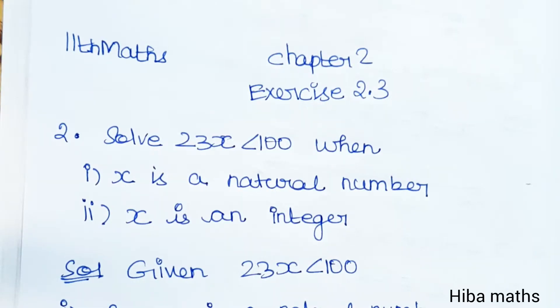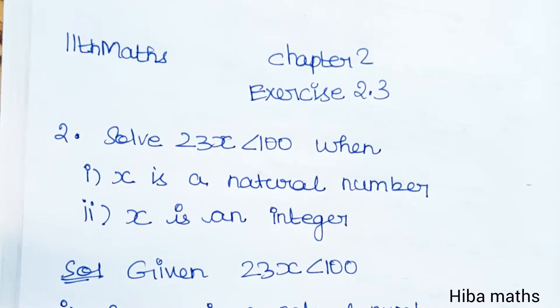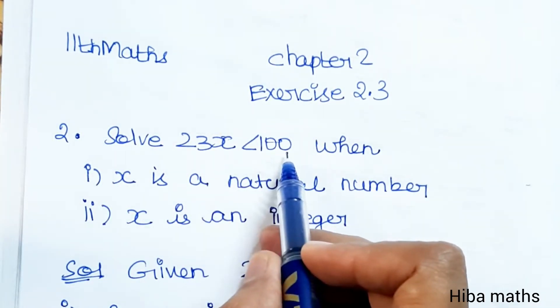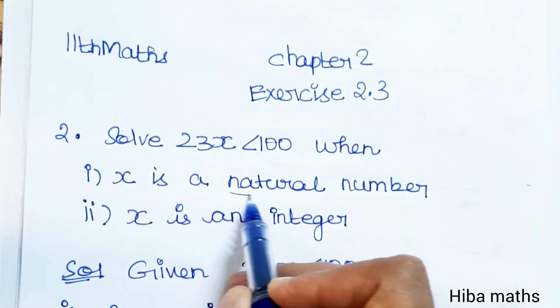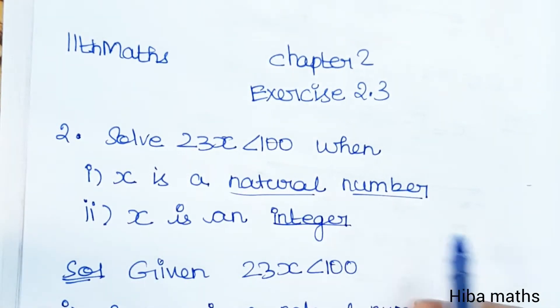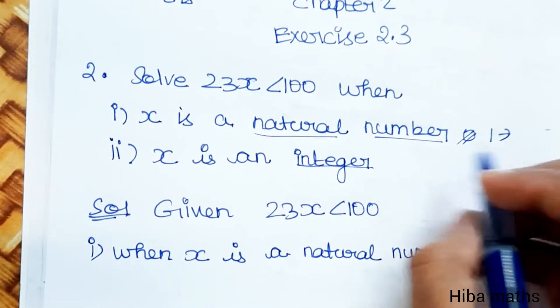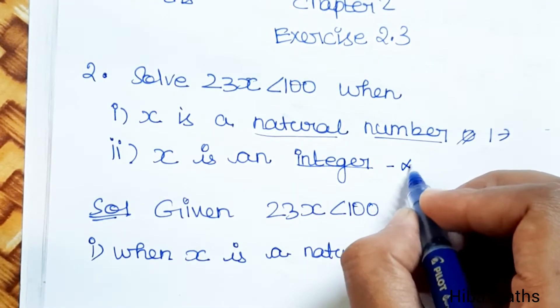Hello students, welcome to Hibamaths 11th standard maths, Chapter 2, Exercise 2.3, second question. Solve 23x less than 100 when x is a natural number and when x is an integer.